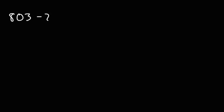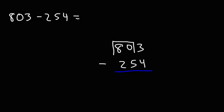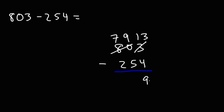For the next example, let's take 803 and subtract it by 254. This is similar to the last problem. 3 minus 4 is not going to work, so we need to borrow a 1. We can't borrow it from 0, but we're going to borrow a 1 from 80. 80 minus 1 is 79, and we put that 1 on the 3, making it 13. So now we have 13 minus 4, which is 9. 9 minus 5 is 4, and 7 minus 2 is 5. So the answer is 549.